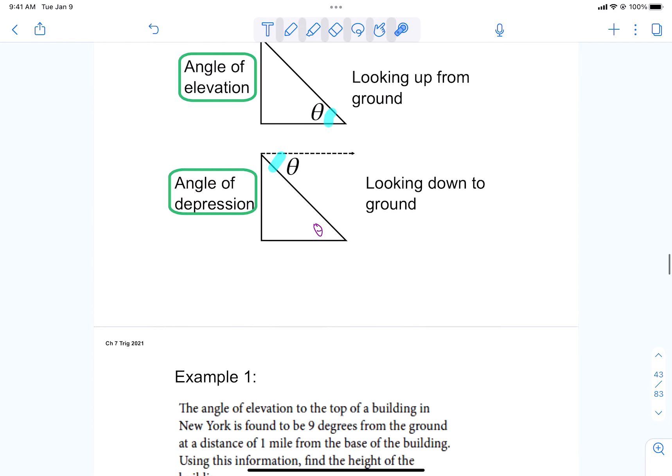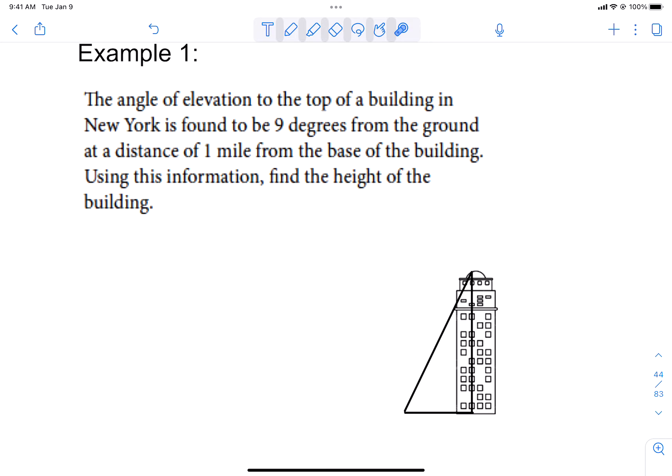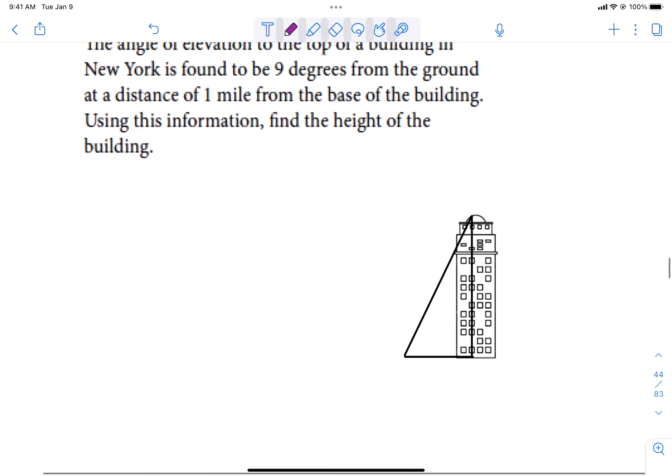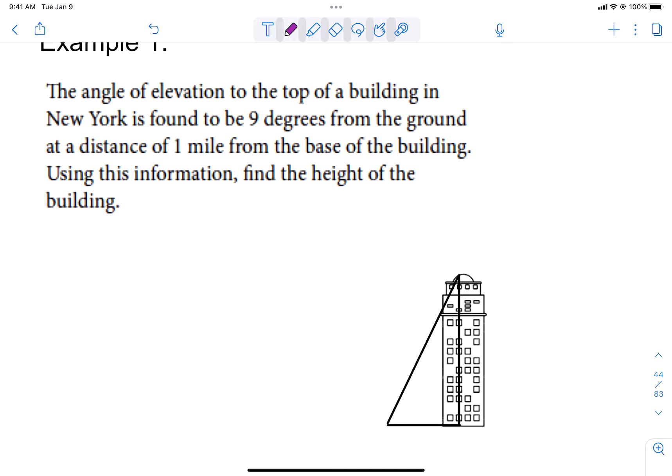Now that being said, I would like to do a few examples. Our first example says the angle of elevation to the top of the building in New York is found to be nine degrees from the ground. So if we look at the picture here, this would be nine degrees.